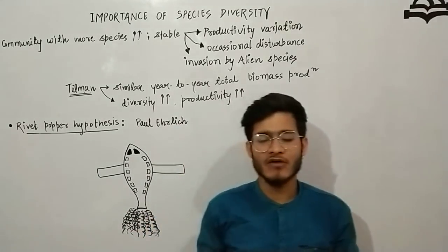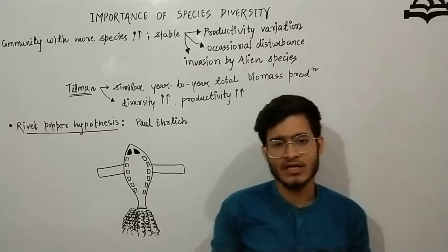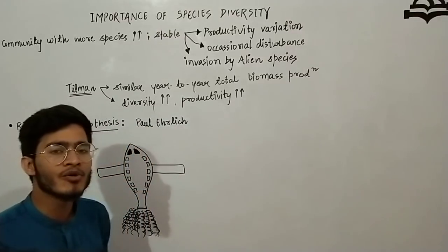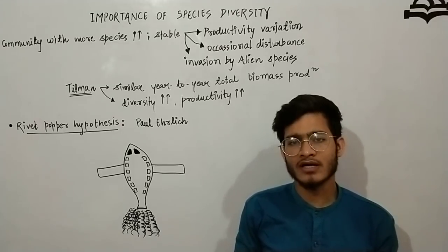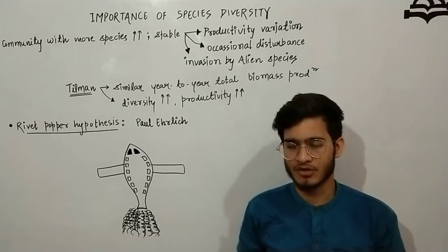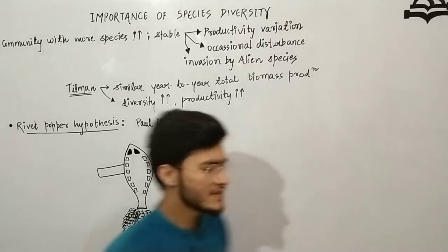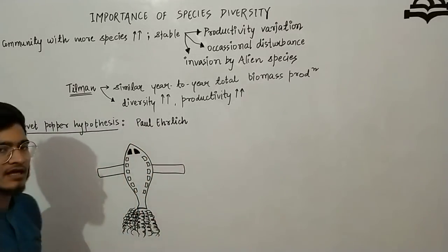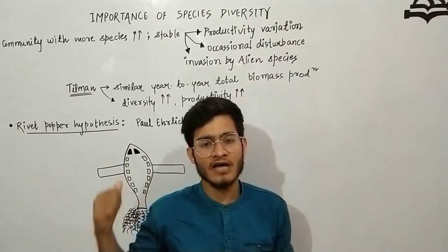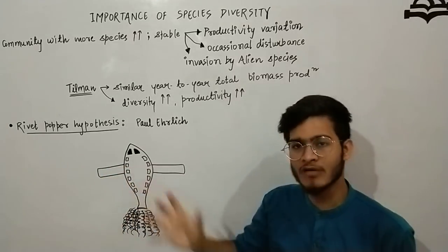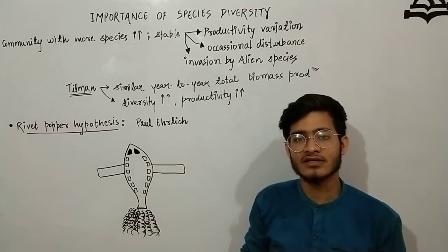Hello guys and welcome back to another video from Vipin Sharma Biology Tutorial. We were discussing biodiversity and its conservation, and today we are going to talk about a very important analogy. An analogy means an example through which we can understand a concept well. This analogy is called the rivet popper hypothesis, given by Paul Ehrlich. Before understanding this hypothesis, we need to understand what it was given for.